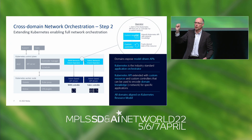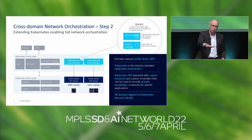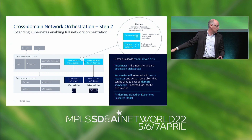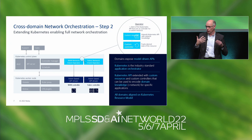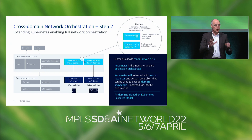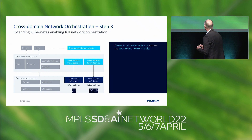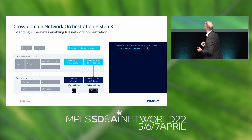Kubernetes has what is called a reconciler — the controller manager calls for a control loop, a call to the custom controller — and it will persistently hunt to get the intended state expressed in your resource definition in line with the state in your application setup. We are saying: let's do the same to get the intended state in line with the state on your switch. We just replace 'application' with 'network service or switch' and everything else stays the same.